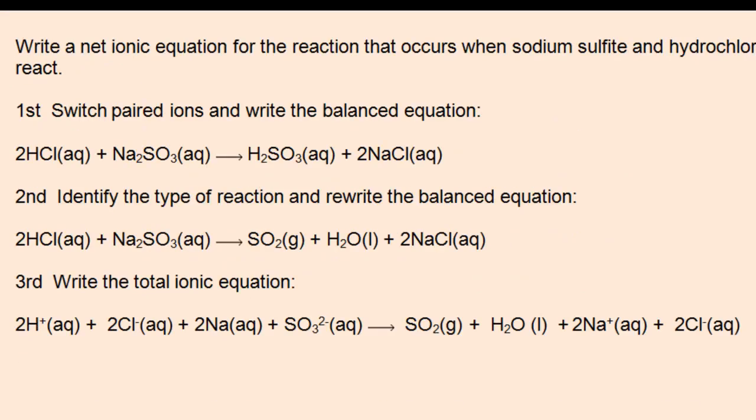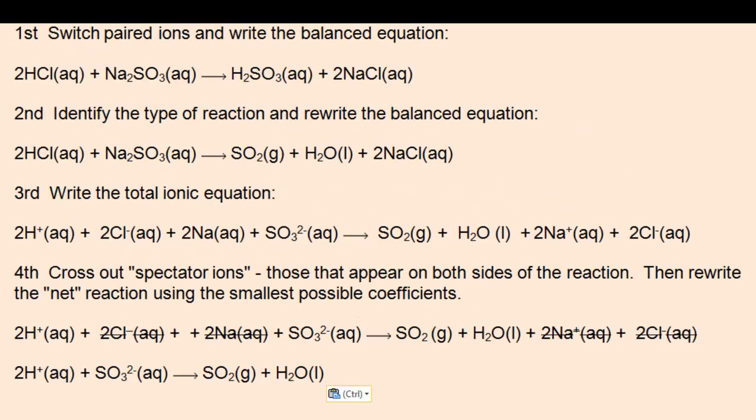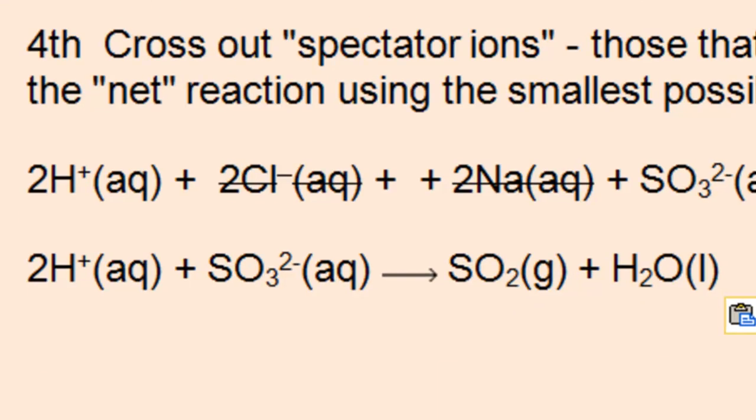Next, we'll write the total ionic equation, followed by the net ionic equation after we cross out the spectator ions. We see that we're left with two moles of acid reacting with one mole of sulfite to produce sulfur dioxide and water.